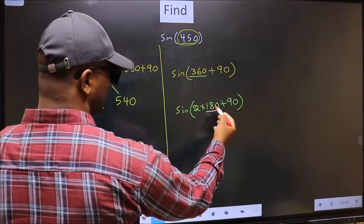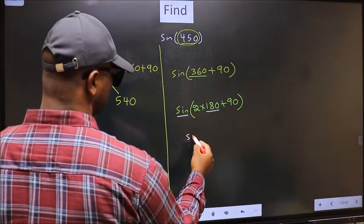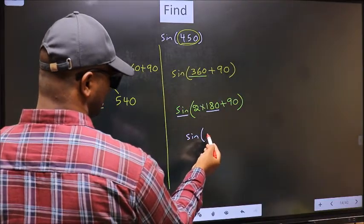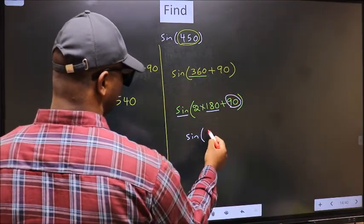Next, here we have 180. So sin is not going to change. It will remain sin. And inside, we get this angle 90.